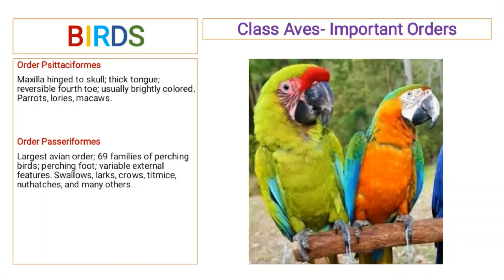Falconiformes are distinguished from Accipitriformes by molecular characteristics. Order Psittaciformes includes birds that possess a maxilla that is hinged to the skull. They have a thick tongue and reversible fourth toe, and these are usually brightly colored. It includes parrots, lories, and macaws.